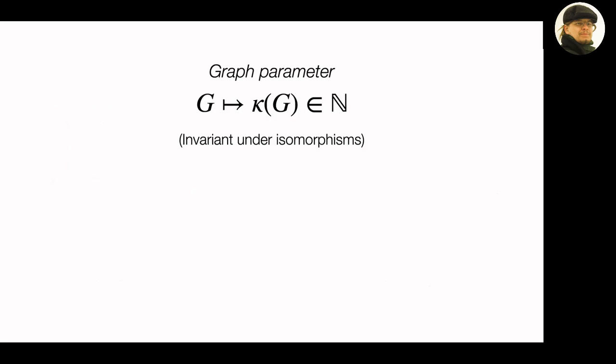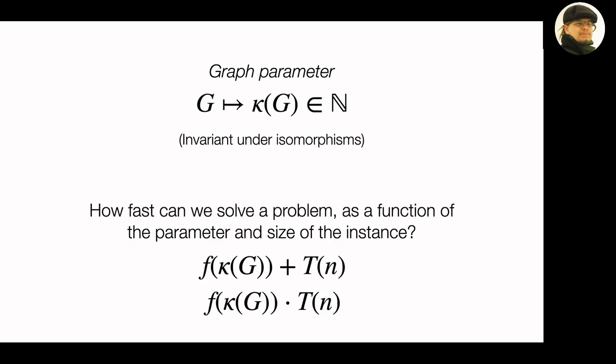For instance, if you look at bounded-degree graphs, you usually care about the running time both as a function of the maximum degree and as a function of the size of the input graph. More generally, a graph parameter is just a mapping from graphs to integers, and it can be any function as long as it's invariant under isomorphisms — we don't want dependence on labels or input IDs. You can then ask how fast you can solve your favorite problem as a function of the parameter and the size of the instance.